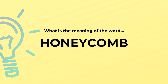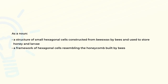What is the meaning of the word honeycomb? As a noun: a structure of small hexagonal cells constructed from beeswax by bees and used to store honey and larvae; a framework of hexagonal cells resembling the honeycomb built by bees.